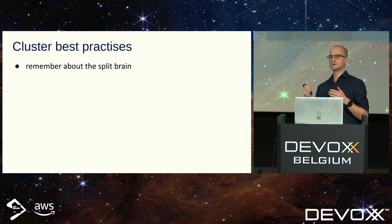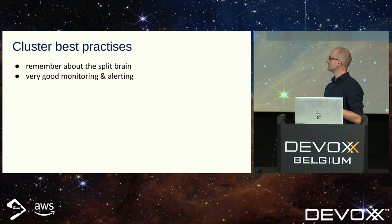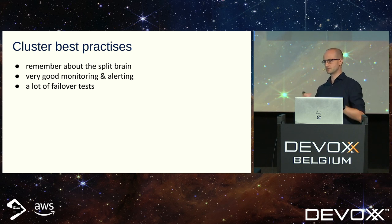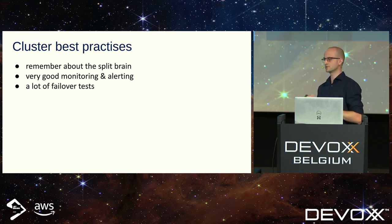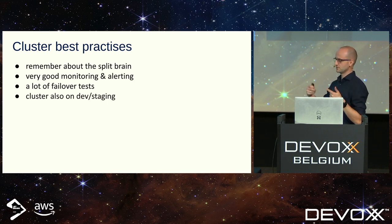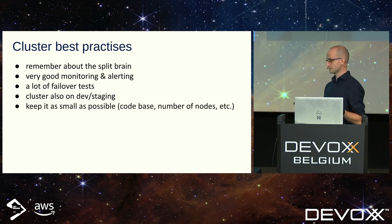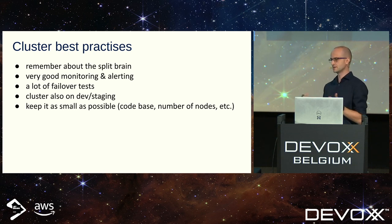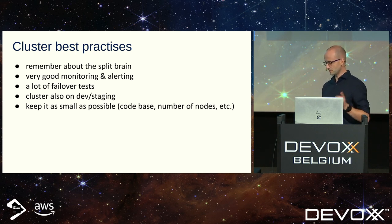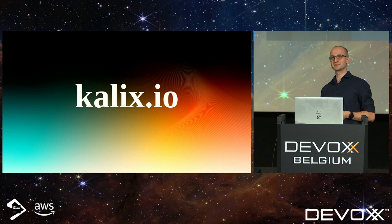Some cluster best practices: remember the split brain problem — it doesn't matter if it's an Akka cluster, Kafka cluster, or Cassandra cluster, there will be a split brain. For Akka cluster, enable a split brain resolver and configure it before you go to production. Prepare very good monitoring and alerting to know 24/7 what is going on with your nodes. Do a lot of failover tests — create your own chaos monkey, put some load, and then randomly restart all your nodes. The cluster should be deployed not only on production but also on dev and staging environments. Keep it as small as possible — if some functionality can be moved to a stateless service, move it there. Managing a cluster with five nodes is much easier than fifteen. If this sounds scary and too complex, Kalix is once again the answer.